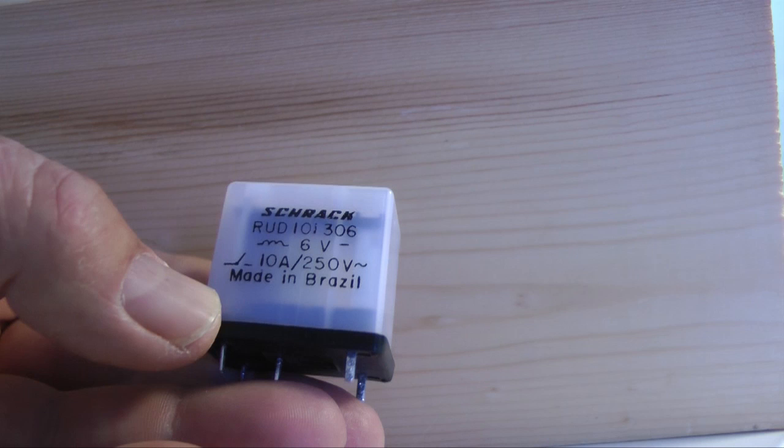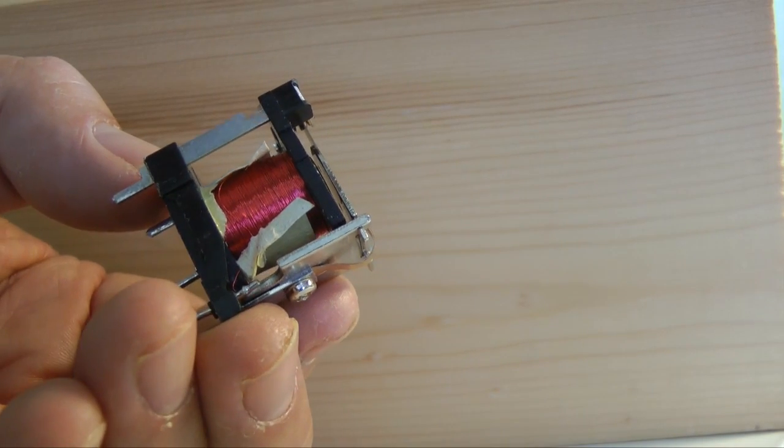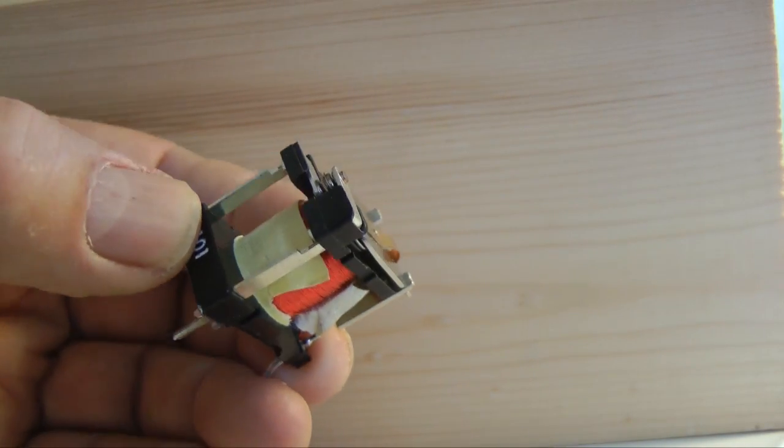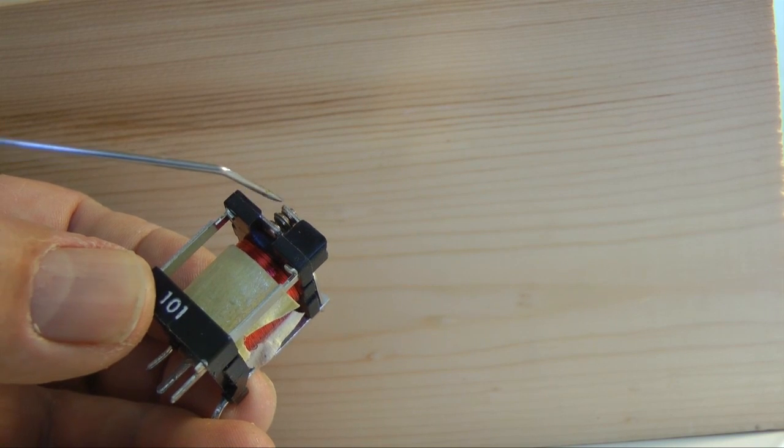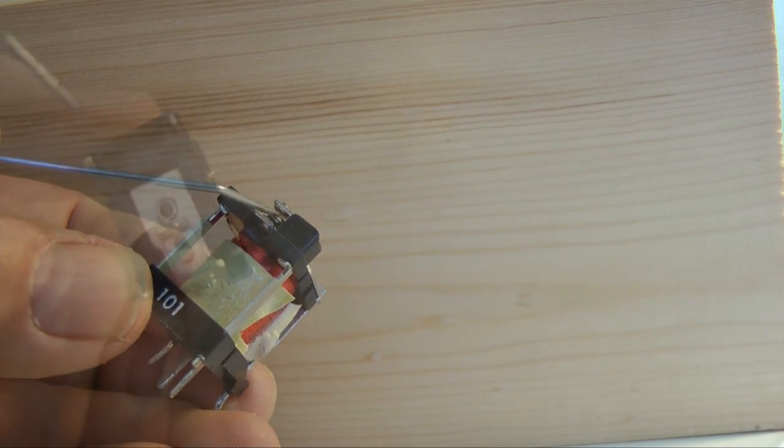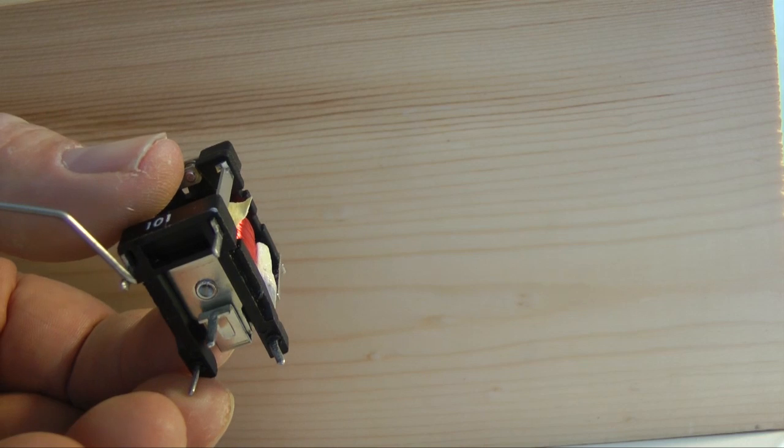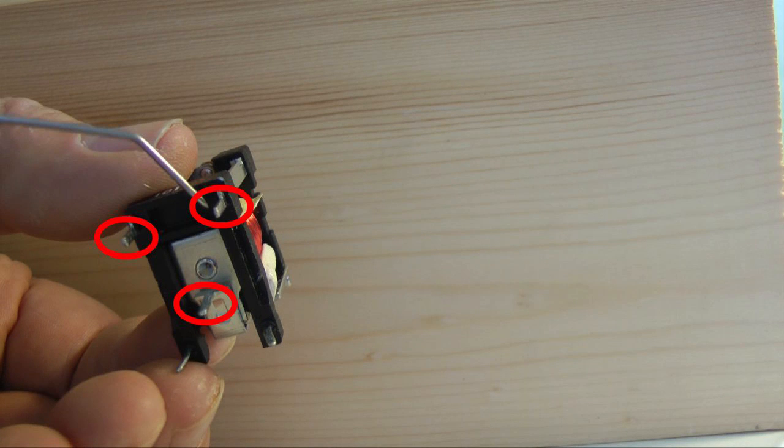You can see the fine wire coil in this relay. When the coil is energized, the resulting magnetic field pulls these two contacts together. They are joined to these two connectors. This is where you would connect a circuit. The contacts would switch it off and on.